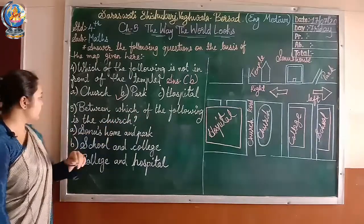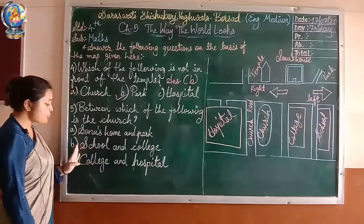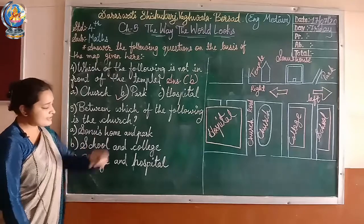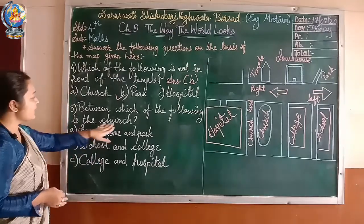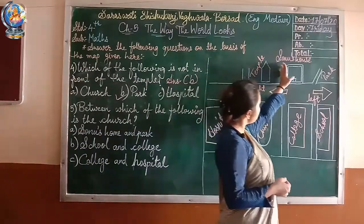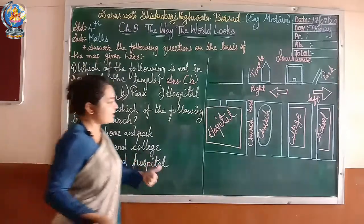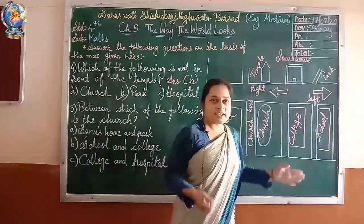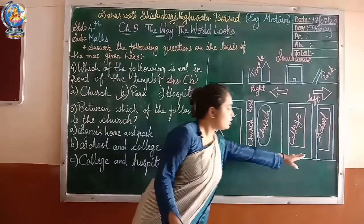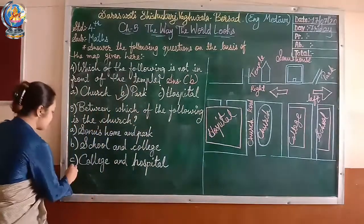Fifth question: between which of the following is the church? We have to find what the church is between. Sonu's home and park — nothing is between them. School and college — nothing between them either. College and hospital — church is in between them. So the answer is option C.